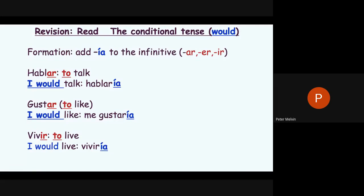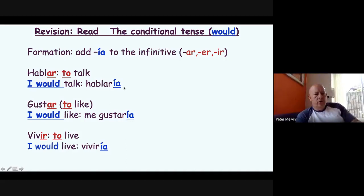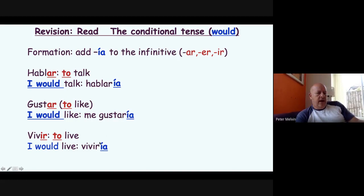What makes the conditional simple is that the first person and third person are the same. So: 'hablaría' is 'I would speak or talk,' 'hablarías' — you put an S on the end — is 'you would speak,' and 'hablaría' is 'he or she would speak,' going back to the same form. That makes it really simple to use.